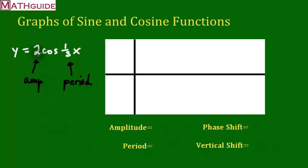What's the amplitude? Well, the amplitude is just the absolute value of this number in front of the cosine. So the absolute value of two is two.